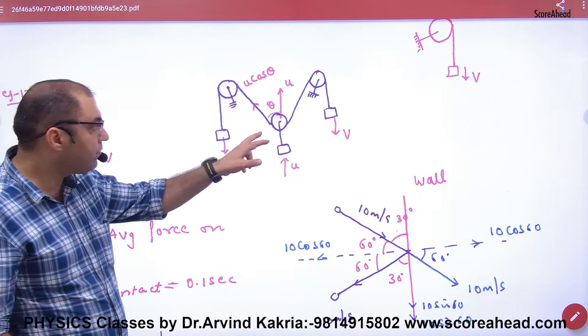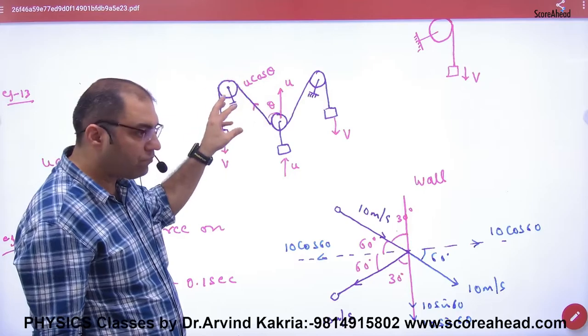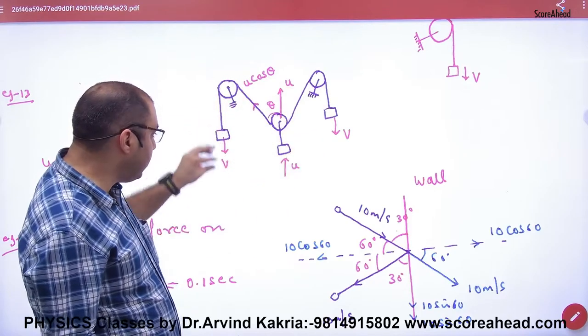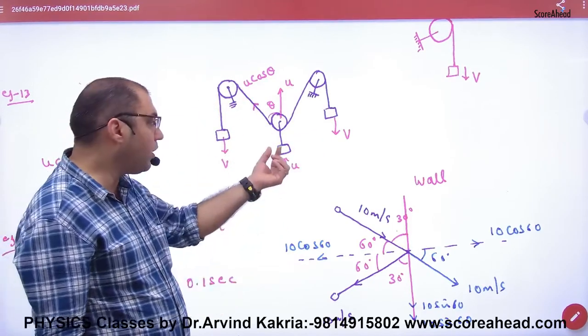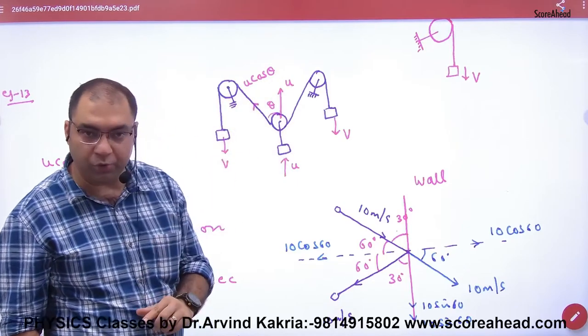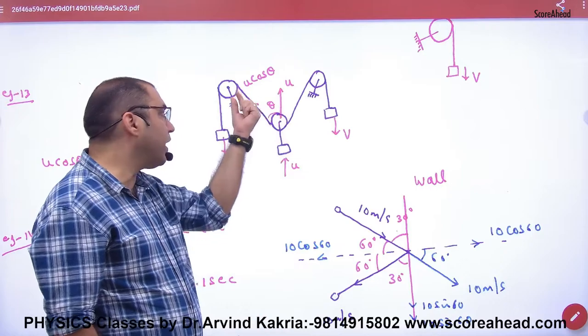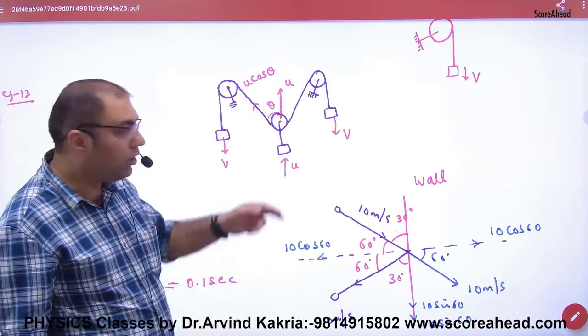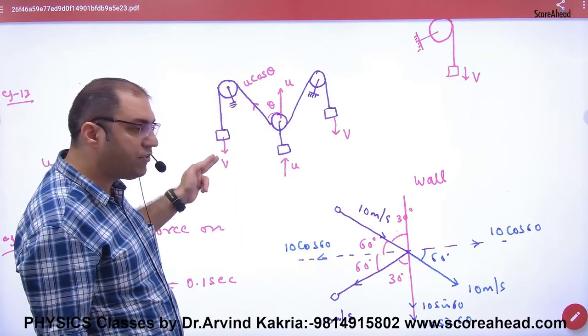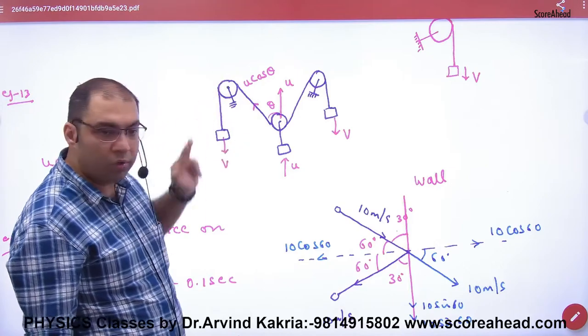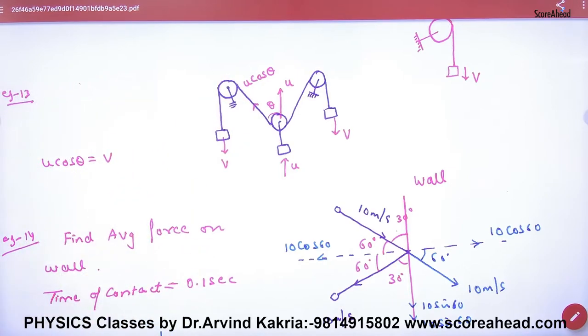Here you can see, in this question, you have pulleys and masses. So this is coming down with velocity of v, and this block is going down with velocity of u. So v and u relation. So u's component string along is u cos theta. So u cos theta and this is already string along is v. So v is equal to u cos theta. That is the answer.